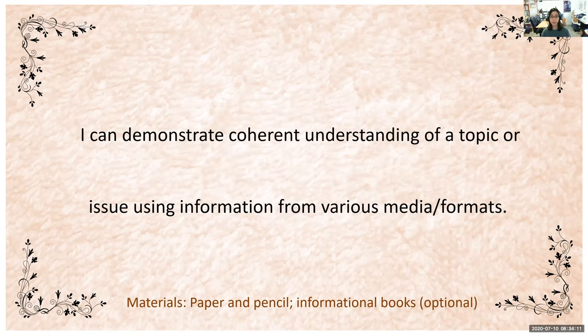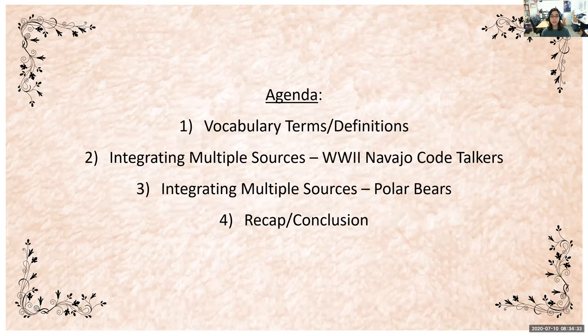The materials you will need are paper and pencil, as well as informational books if you have them. An informational book contains true facts about a topic — for example, books about butterflies, how chocolate is made, or the game of soccer. On today's agenda, we'll first review vocabulary terms and definitions, then integrate multiple sources for the topic of World War II Navajo code talkers, then polar bears, and finally recap and conclude.